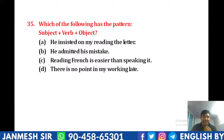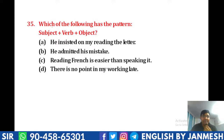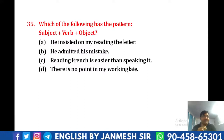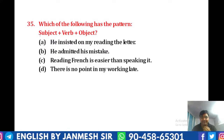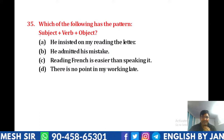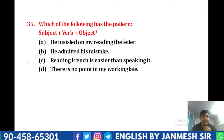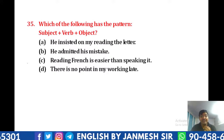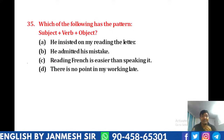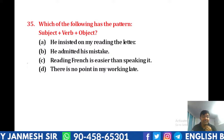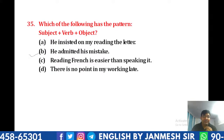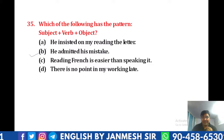Question number 35: which of the following has the pattern S-V-O? इसमें S यानि subject, then verb, and then object है। 'He insisted on my reading' — देखो subject plus verb है, लेकिन 'on my reading' object नहीं है। 'Admitted his mistake' — subject भी है, verb भी है, और 'his mistake' object भी है। तो answer हमारा 100% B बनेगा। Very good बच्चों।